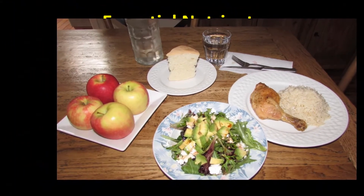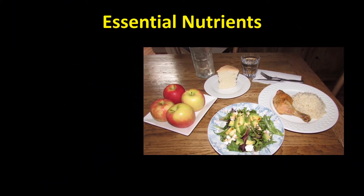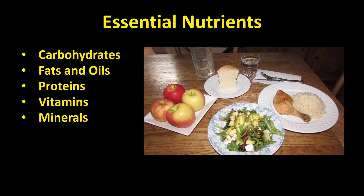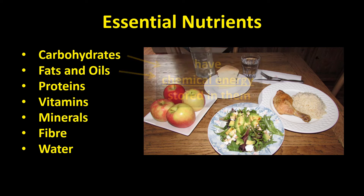Our food actually contains all the essential nutrients that we need to live. Food contains carbohydrates, which provide energy for our bodies; fats and oils, which also provide energy but also have many other functions in our bodies; proteins, which are the main building blocks of our bodies; vitamins and minerals, which play lots of different roles within us; fibre, which we need to make our intestines — that is, our guts — work properly; and water. It's the carbohydrates and the fats and oils that have chemical energy stored in them — chemical energy that our bodies need.